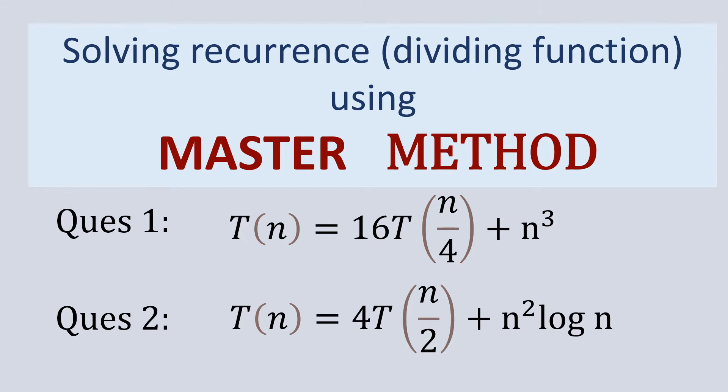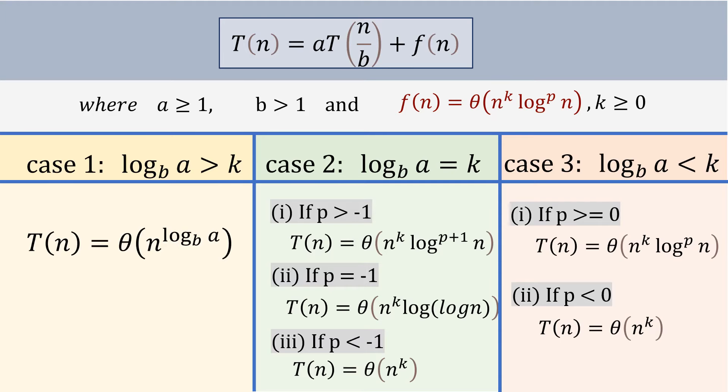Let's get started. Dividing function has a standard format which is T(n) = aT(n/b) + f(n). While solving the questions of master method you just have to find a, b and f(n), figure out which case your question belongs to, put out the values and you will get the complexity. The approach is quite simple, let's see how to apply it.